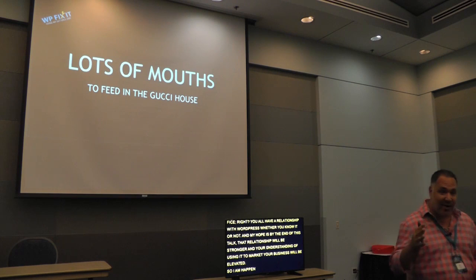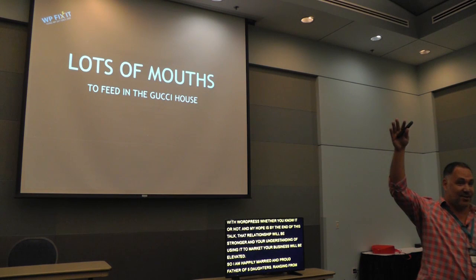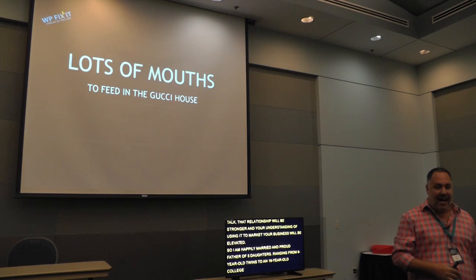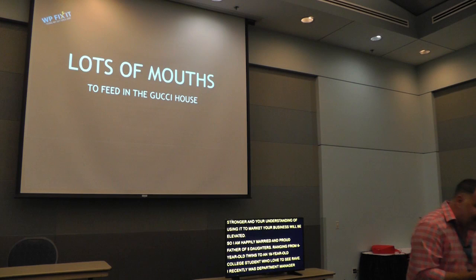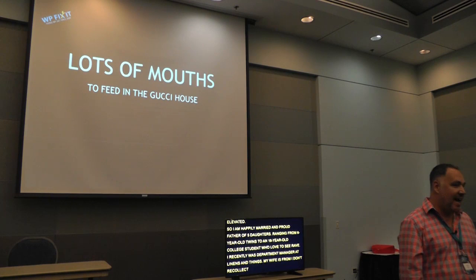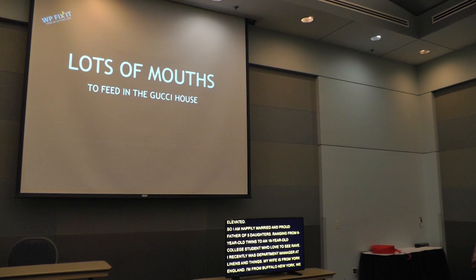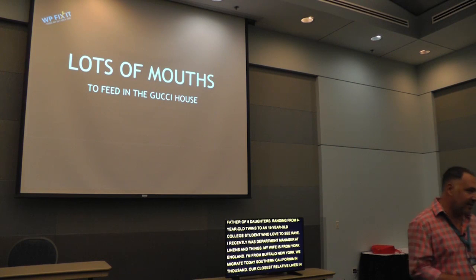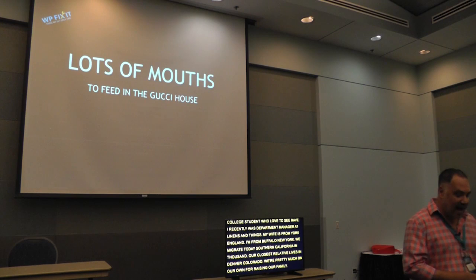I am happily married and the proud father of five daughters, ranging in age from six-year-old twins all the way up to an 18-year-old college student who loves to rave. I recently was a department manager at Linens and Things. My wife is from York, England; I'm from Buffalo, New York. We migrated to Southern California in 2000, and our closest relative lives about a thousand miles away in Denver, Colorado. We are pretty much on our own for raising our family.